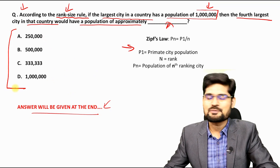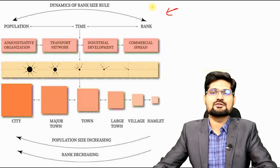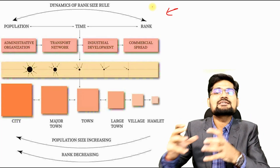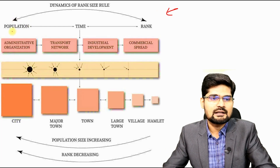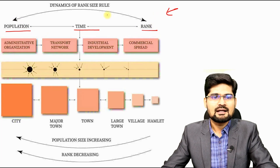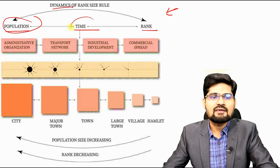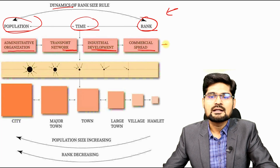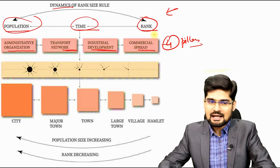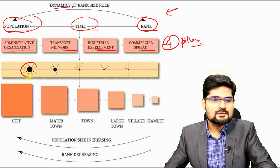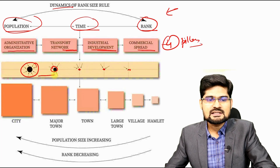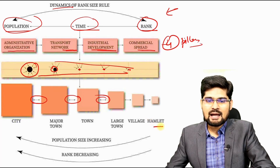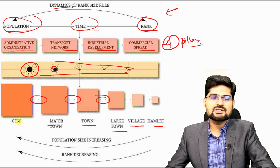Now let's look into the dynamics of rank size rule and understand in a simple way why long developmental history matters and what the relationship is between the primate city and next-order cities. In this flow diagram, population, time, and rank are the three key factors. Administrative organization, transport network, industrial development, and commercial spread are the four pillars of urban development.